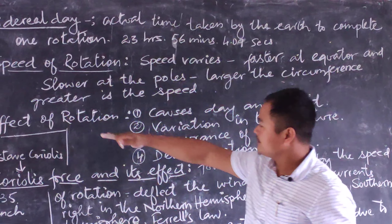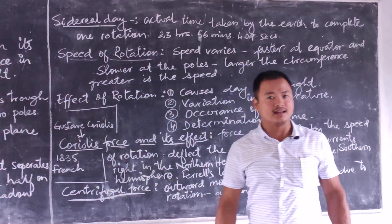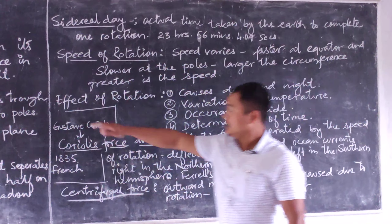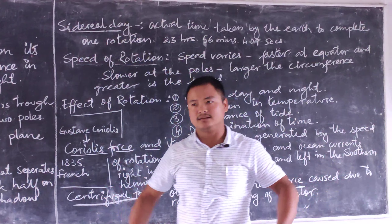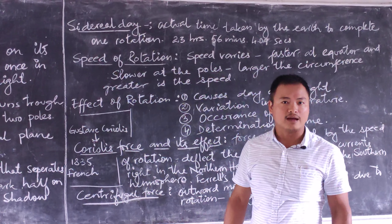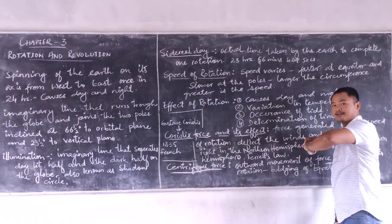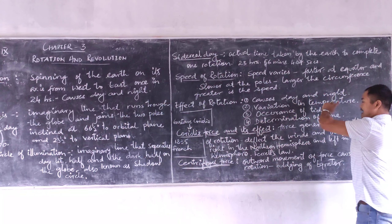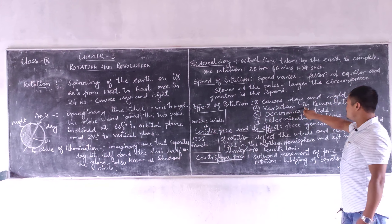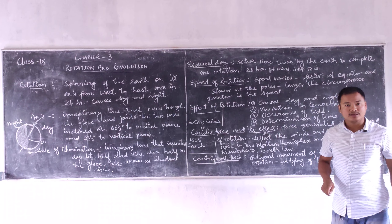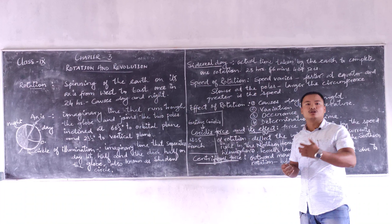Rotation has large impacts on our lifestyle. Its first and major effect is that it causes day and night, which itself changes a lot in our lifestyle. Apart from that, it also causes variation in temperature — because of rotation, the amount of insolation received is not the same everywhere.